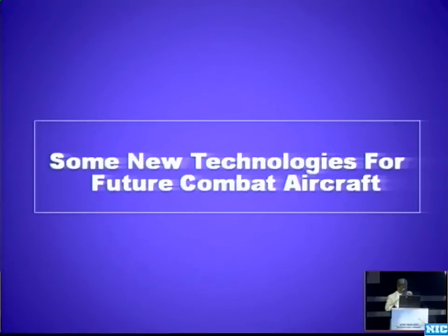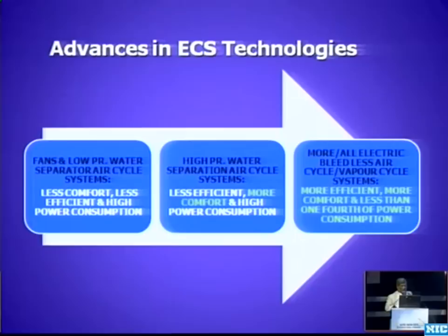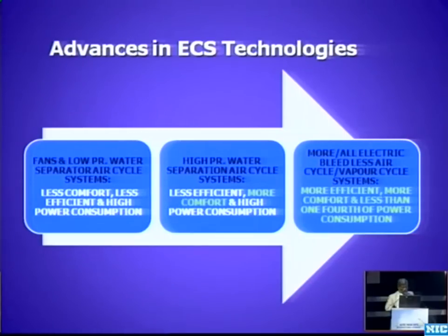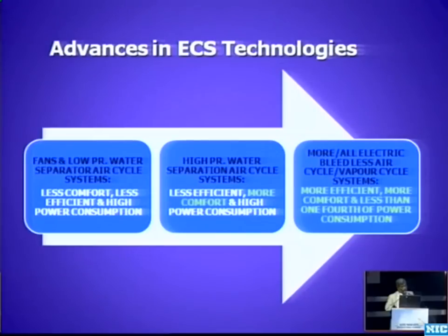Having seen the objectives the designer must keep in mind, before the design starts, designers will have various technology options in front of them. These options have to be studied and decisions made as to which technology to take. For example, the environmental control system — the first two blocks indicate conventional options, while the last one indicates the future in terms of all-electric systems. Probably for the advanced medium combat aircraft or unmanned systems, we may think of using all-electric systems rather than conventional ones.